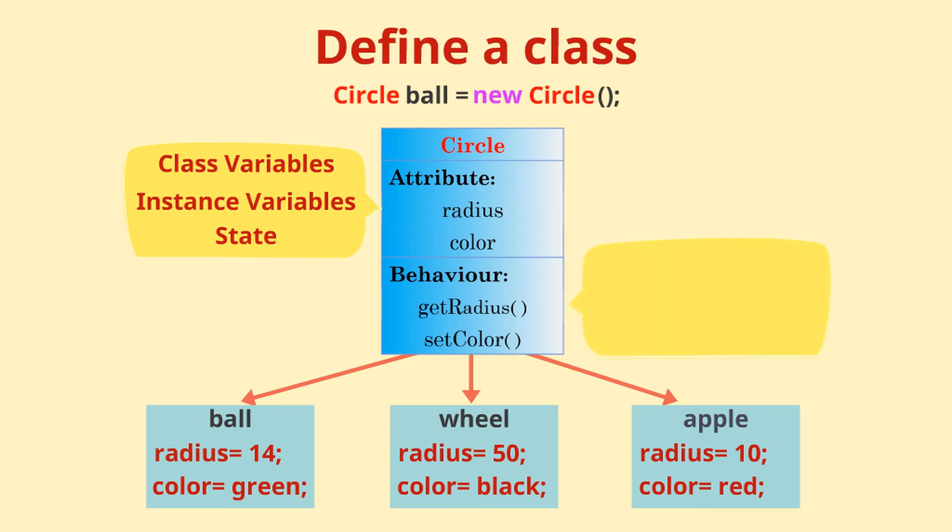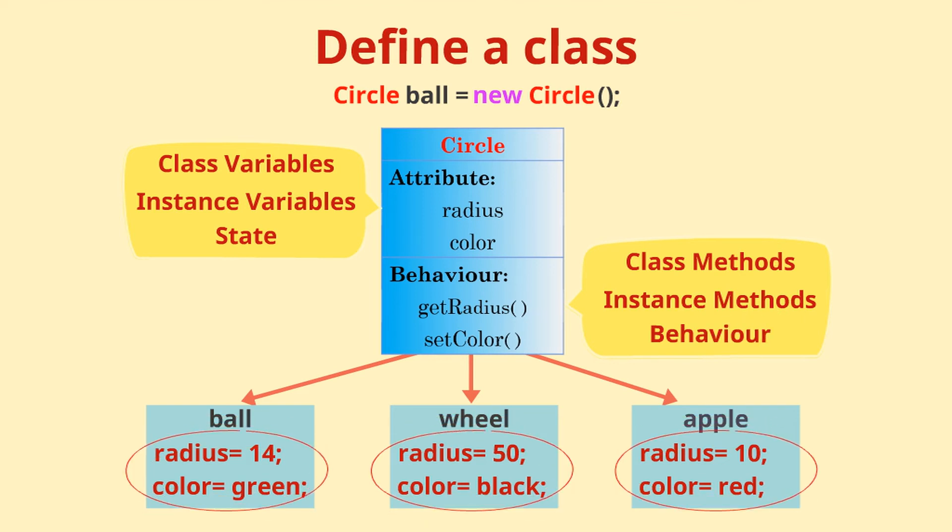The functions are also referred to as class methods, instance methods, or behavior. Here, each object has its own data or state like different colors and radius. Depending upon the state, the instance methods or behavior also return different values.